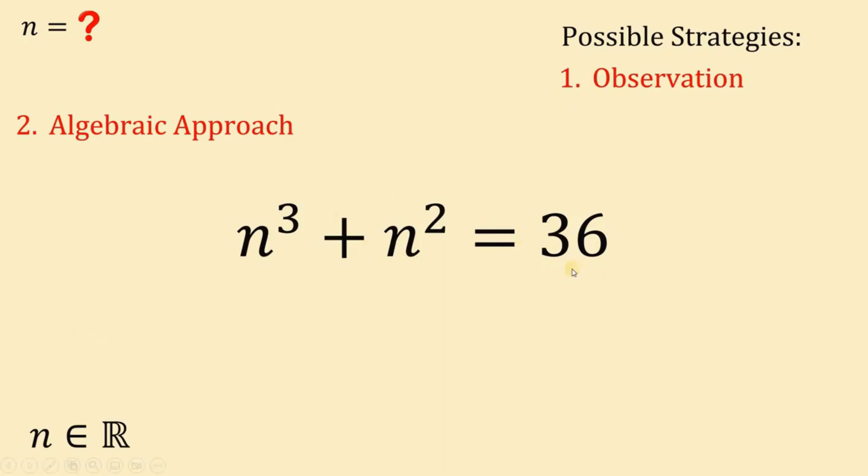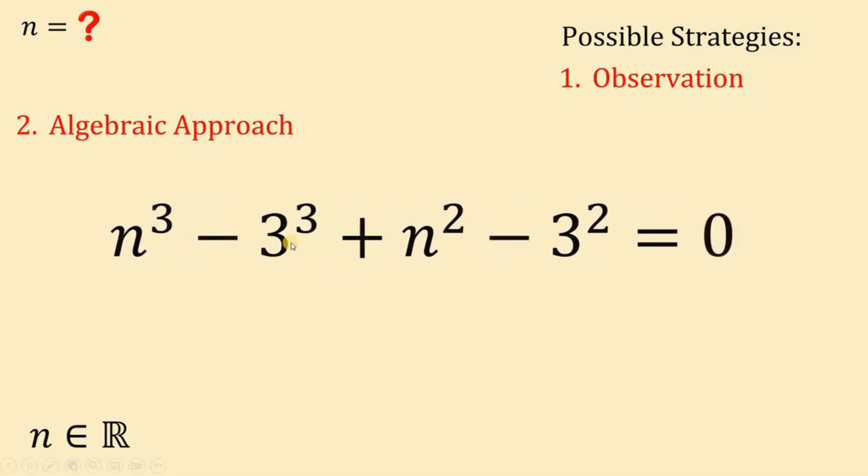We have n cubed plus n squared equals 36. Again, 36 is 27 plus 9. 27 is 3 cubed and 9 is 3 squared. We know that from the observation method. Now, what we're going to do here is to rearrange some terms. So we have now n cubed minus 3 cubed plus n squared minus 3 squared equals to 0.